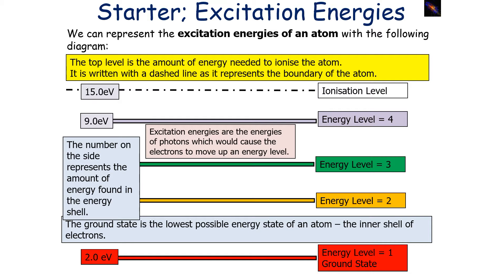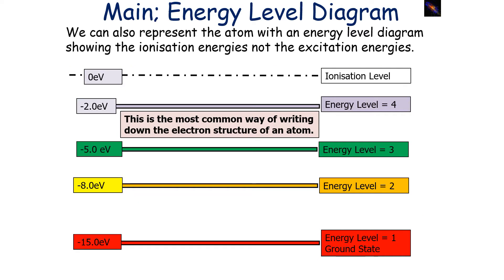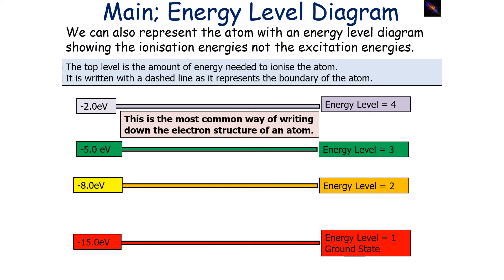The number on the side represents the amount of energy found in each energy shell. For example, in this case the ground state has an energy of 2 eV. We can also represent the atom with an energy level diagram showing the ionisation energies, not the excitation energies. Representing the atom with ionisation energies is probably the most common way of writing down the electron structure of an atom. The top line is the amount of energy needed to ionise the atom, written with a dashed line as it represents the boundary of the atom.